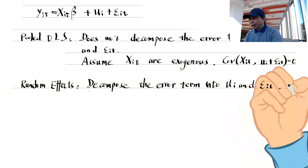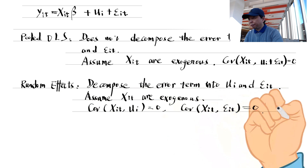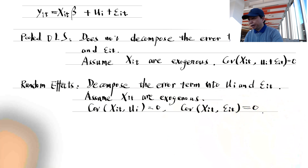The random effects estimator decomposes the error term into the individual-specific component mu_i and the random component epsilon_it. It also assumes that the explanatory variables are exogenous, that is, not correlated with the error term. It has a more detailed assumption of the error term and is more efficient than the pooled OLS.